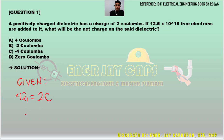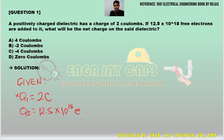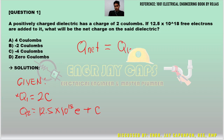The next charge is Q2, which is 12.5 times 10 to the 18 electrons. Since this is in electrons, we have to convert it to coulombs. The required in the problem is Q_net. The formula is: Q_net equals Q1 plus Q2.